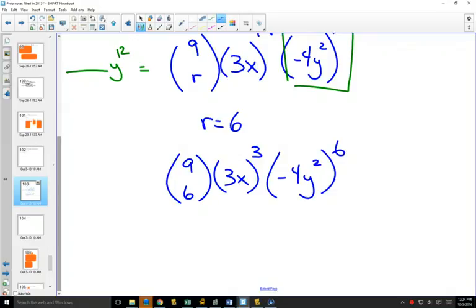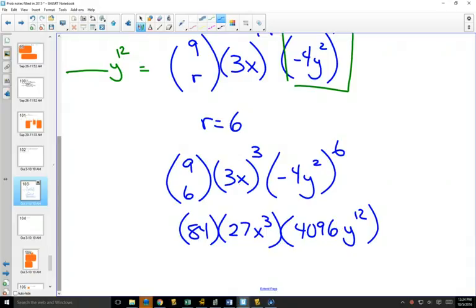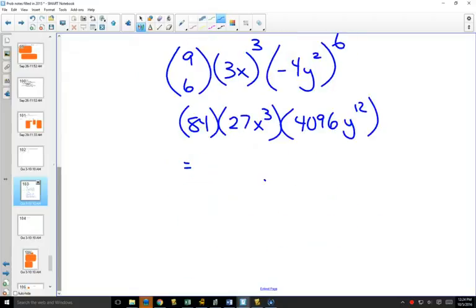We can calculate each of these things separately. So we go to our calculator. 9 choose 6 is 84. 3 to the power of 3 is 27. Negative 4 to the power of 6 is positive 4,096. If we multiply 4,096 times 27 times 84, we get 9,289,728 x cubed y to the 12th.